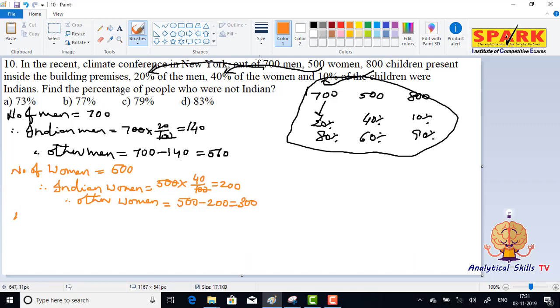Next, number of children: number of children is equal to 800. So Indian children equals 800 into 10 percent, which is 10 by 100, that's 80. Therefore, other children, that means apart from India, is equal to 800 minus 80, that is 720.